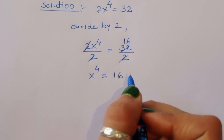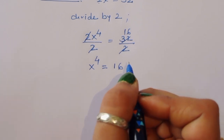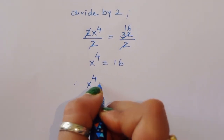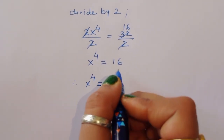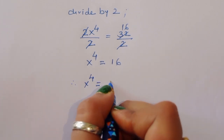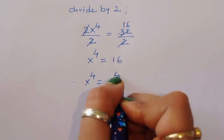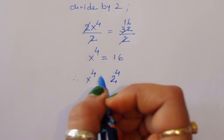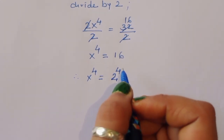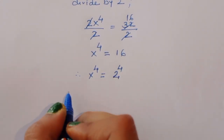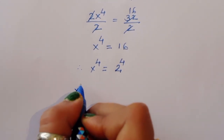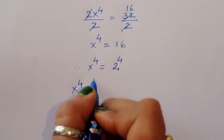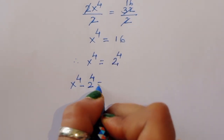Now x⁴ = 16, and we can write 16 as 2⁴. So x⁴ = 2⁴, which means x⁴ minus 2⁴ is equal to 0.